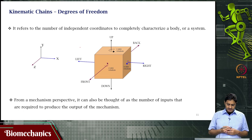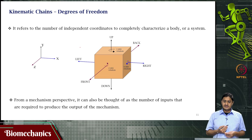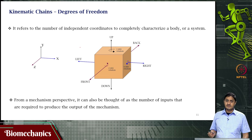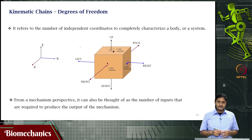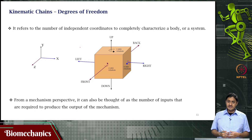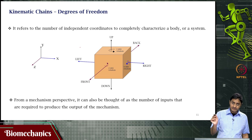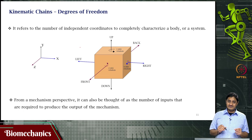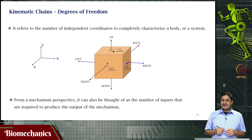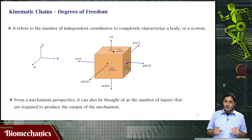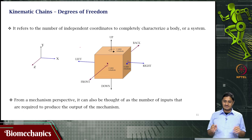From a mechanism perspective, degrees of freedom is the number of inputs that are required to produce the output of the mechanism. If you have a mechanism, how many inputs do you need to produce a particular output? If you have one link of an N-link kinematic chain grounded or attached, that is called a mechanism — a kinematic mechanism.